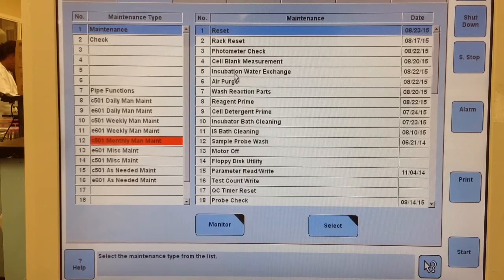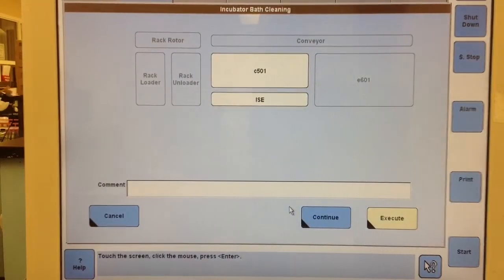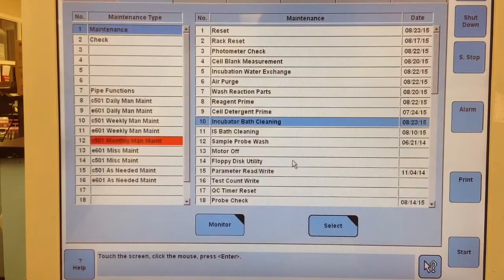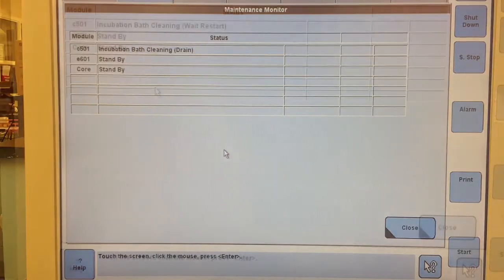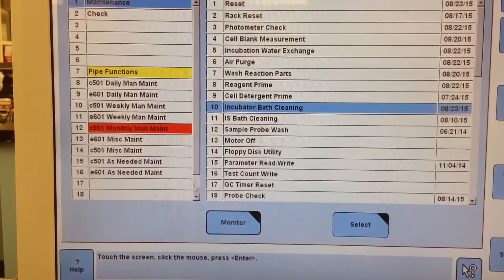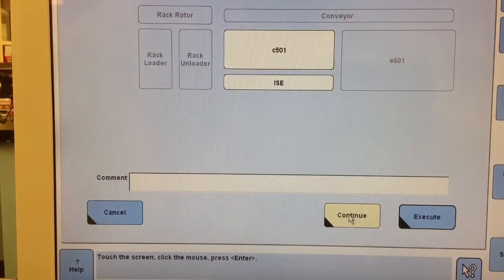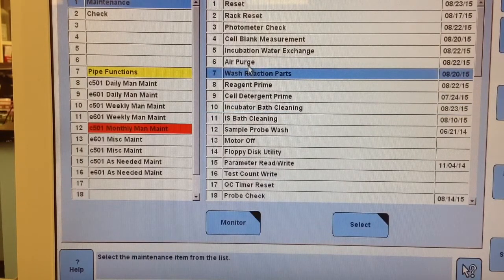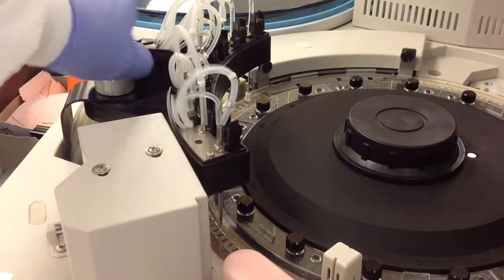To start the incubation water bath cleaning, you need to select incubator bath cleaning and execute it. This will drain the water from the water bath so you can get in there. It's important to keep the cover closed before you can start this. Go ahead and execute it. You can monitor it in the 501 - it's going to go from incubation bath cleaning, draining to wait restart. Once it goes to wait restart, the next thing you'll be able to do is hit continue after the reaction cells are back in. That'll refill the bath, and then you're going to have to perform wash reaction parts and a cell blank measurement before you move on to using the analyzer.